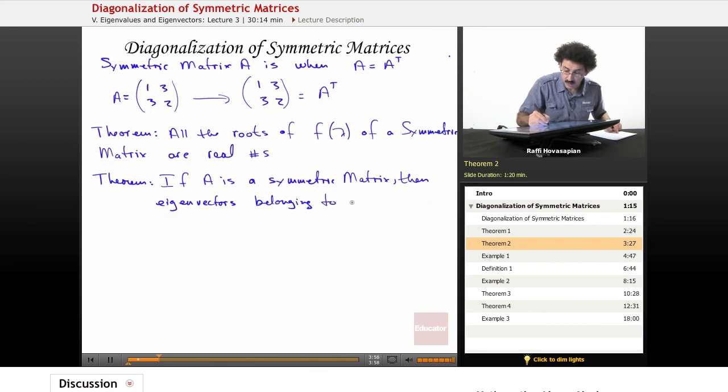belonging to distinct eigenvalues, because you know, sometimes eigenvalues, they can repeat. Eigenvalues are orthogonal. That's interesting. And orthogonal, as you remember, is dot product is equal to zero, or perpendicular.